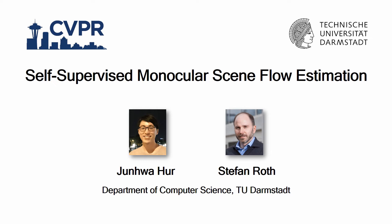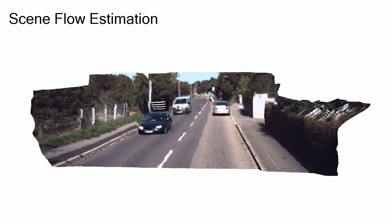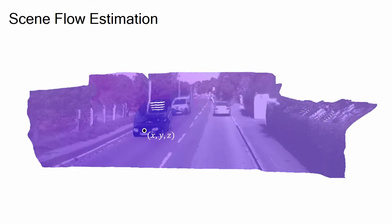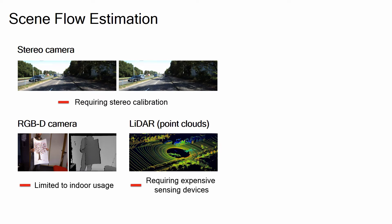I'd like to present self-supervised monocular scene flow estimation, a joint work of Junahar and Stefan Luth from TU Darmstadt. Scene flow estimation is the task of obtaining 3D structure and 3D motion of dynamic scenes. Many approaches have been recently proposed leveraging various types of input data, but each of their sensor configurations has limitations such as requiring collaboration, being limited to indoor usage, or requiring expensive sensing devices.